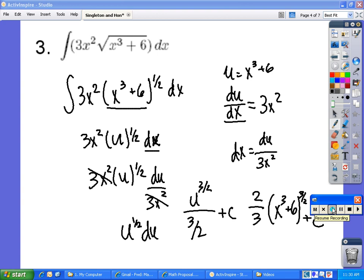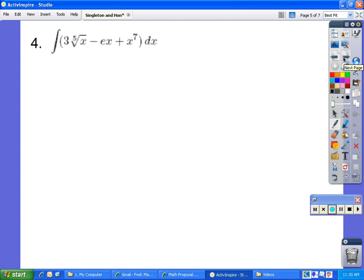This is Lewis Hahn and we will be doing number 4. In here we have to simplify. So it will be the integral of 3x to the 1 fifth minus ex plus x to the power of 7 dx.